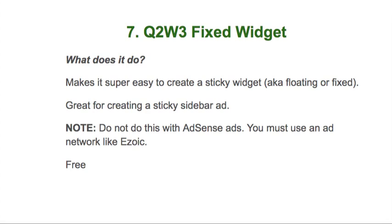Number seven is the Q2W3 Fixed Widget — a free plugin I've been using for years. If you want to make something sticky or floating in the sidebar, this is the widget to do it. It's very simple, does one thing really well, and it's free. Note: if you use AdSense ads, do not make your sidebar ad sticky with this — AdSense does not permit that. If you want a sticky ad, you need an ad network with arrangements to permit it, like Ezoic. You can use this fixed widget with the Ezoic ad tag for a sticky sidebar ad that earns more.